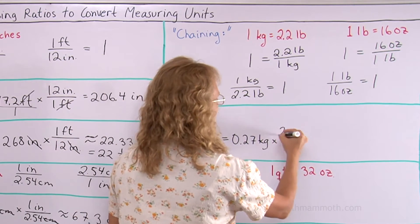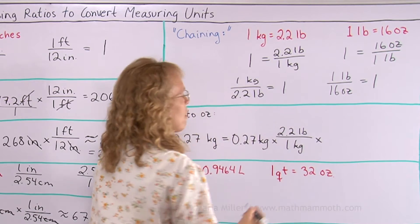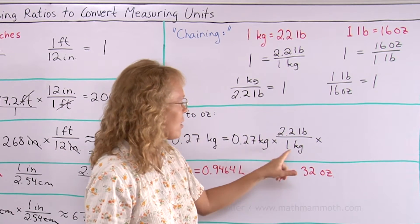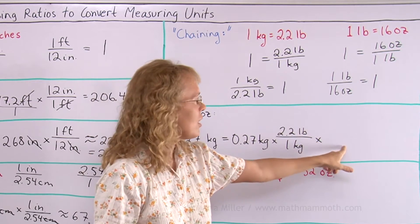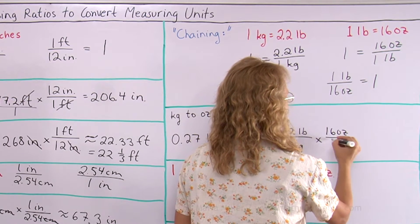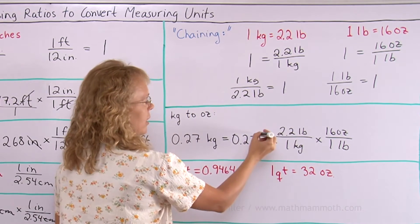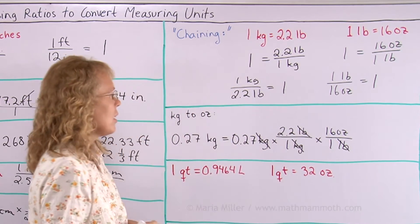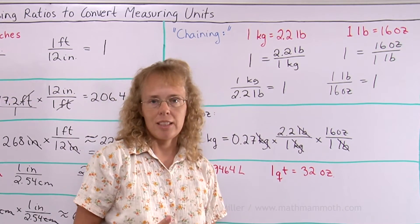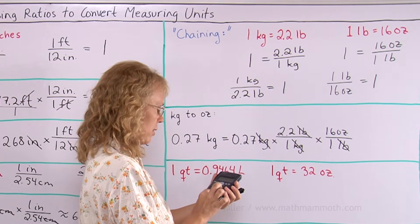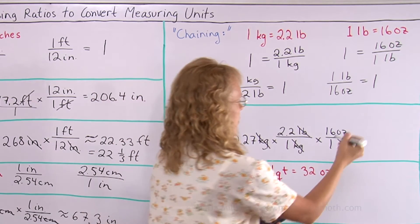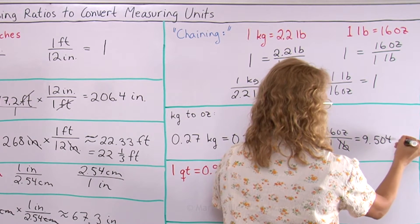It will be this one here. Then I will multiply one more time by number 1. This is a special form of number 1, both of those. And this time, my kilograms are going to cancel. This time I'm going to cancel the pounds and the pounds. So I need to have pounds in the denominator. It's this one here. 16 ounces over 1 pound. And so, like I said, the kilograms cancel and the pounds cancel. And now what will be left is ounces. That's what I wanted. So I just multiply with the calculator and get my ounces. 0.27 times 2.2 times 16 equals 9.504 ounces.